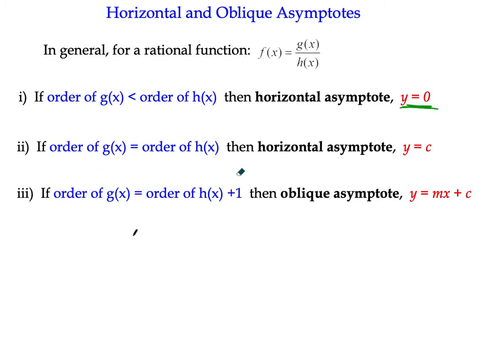In order to get an oblique asymptote, the order of the denominator would have to be one less than the order of the numerator. In other words, we've got an improper fraction, a top-heavy fraction. We would have something like x squared plus 2 all over x minus 5. That function is order 2 over order 1 - the order is one more on the top than below, therefore it would be an oblique asymptote.